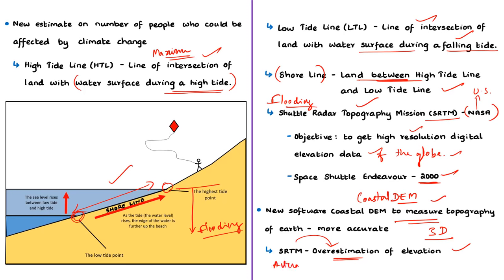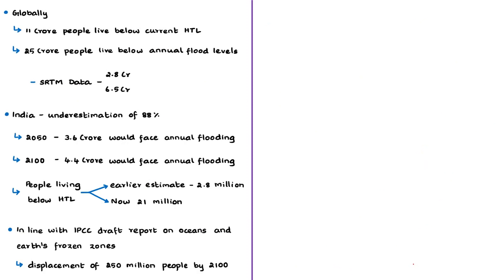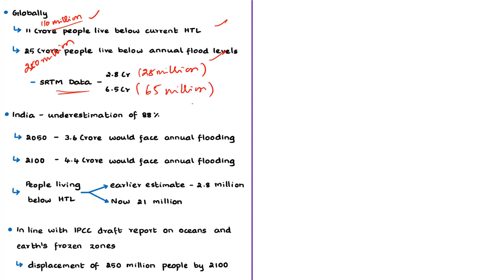The authors claim that data based on Coastal DEM is more accurate as it uses more variables such as vegetation cover and population indices, plus more sophisticated modeling techniques. The study says that globally about 110 million people live on land below the current high tide lines and about 250 million live below annual flooding levels. This contrasts with SRTM-based estimates of about 28 million and 65 million respectively.